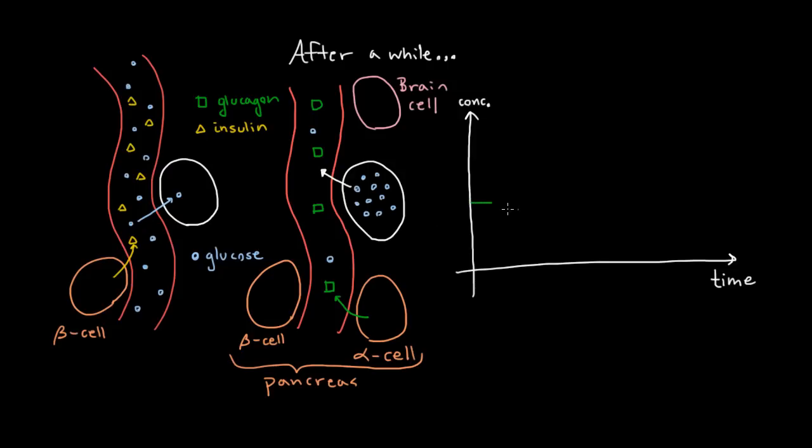So we have some glucagon in the blood, and we probably have very little insulin in the blood. But then let's say that at this time right here, we do what we talked about in the previous video, which is to say we eat a nice big piece of chocolate cake. Suddenly, pretty quickly, we're going to get a huge spike in glucose in the blood.